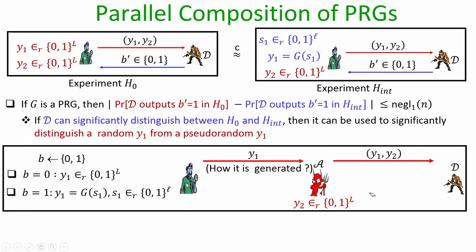On the other hand, if Y1 is generated by running the pseudo random generator G, then Y1 concatenated with a uniformly random Y2 would look like a challenge the distinguisher expects in experiment H_int. Because in H_int, the first part of the sample is generated by the pseudo random generator while the second part is uniformly random.